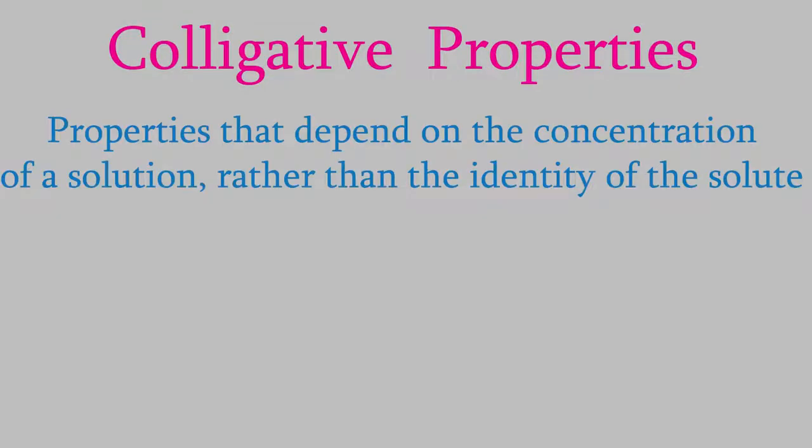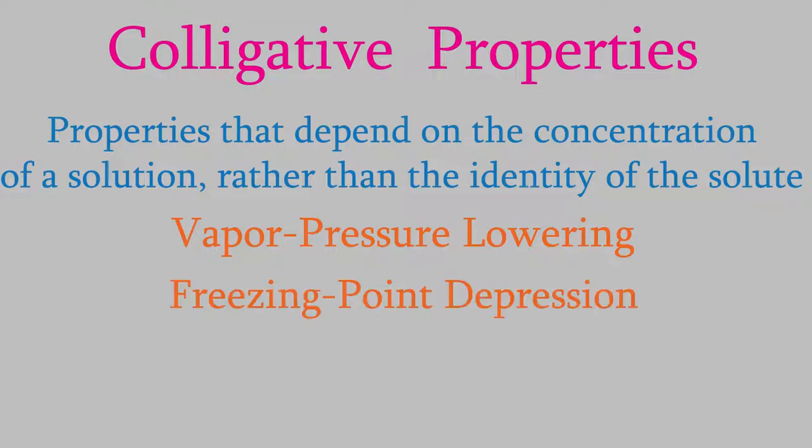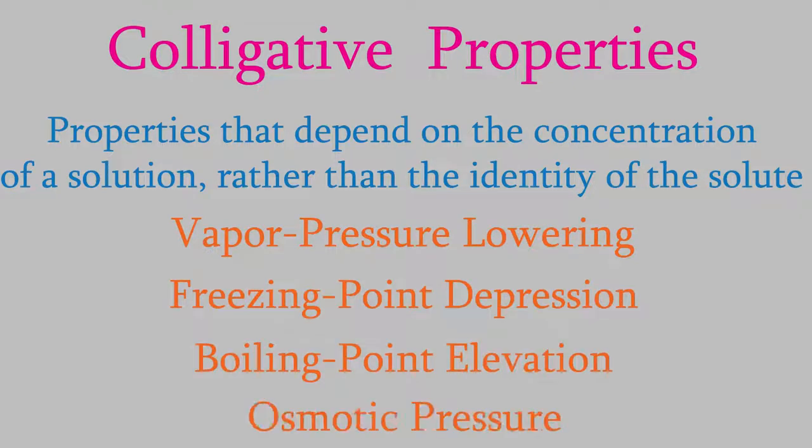The properties of a solution that depend on the amount of solute are called colligative properties. There are four of them: vapor pressure lowering, freezing point depression, boiling point elevation, and osmotic pressure. We'll talk about each of them in this video and the next two. For the rest of this video, I want to focus on that first one, vapor pressure lowering.